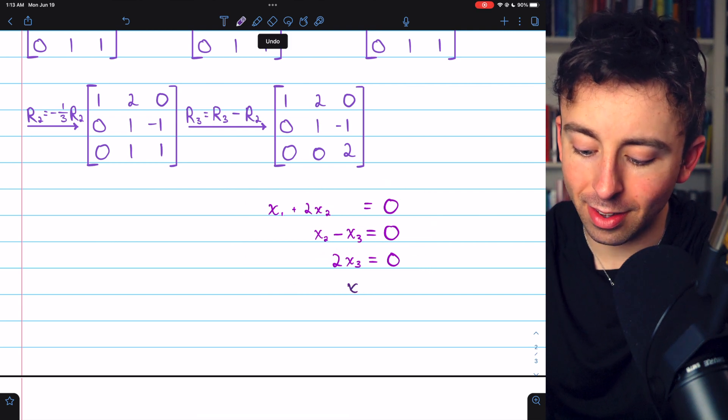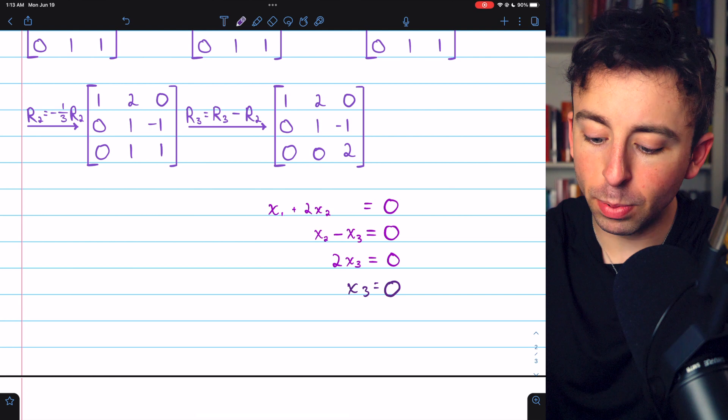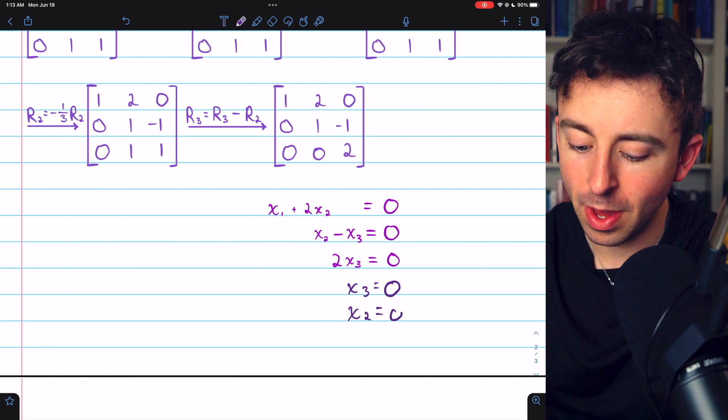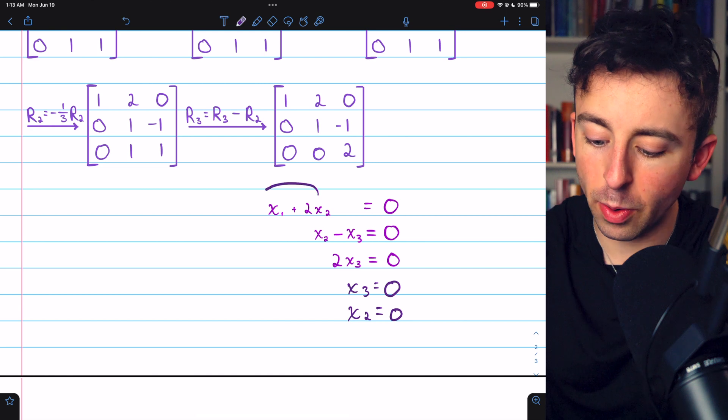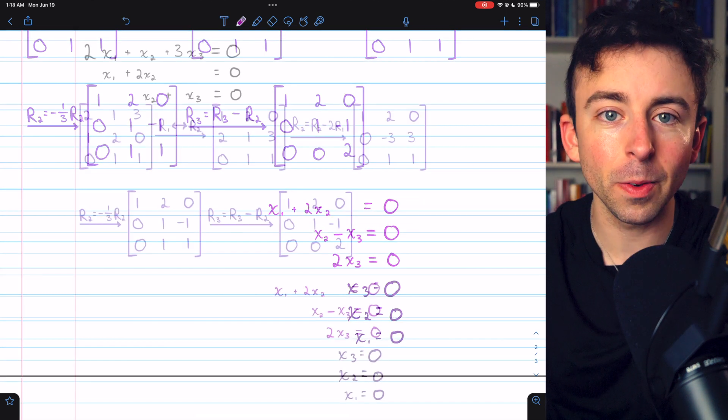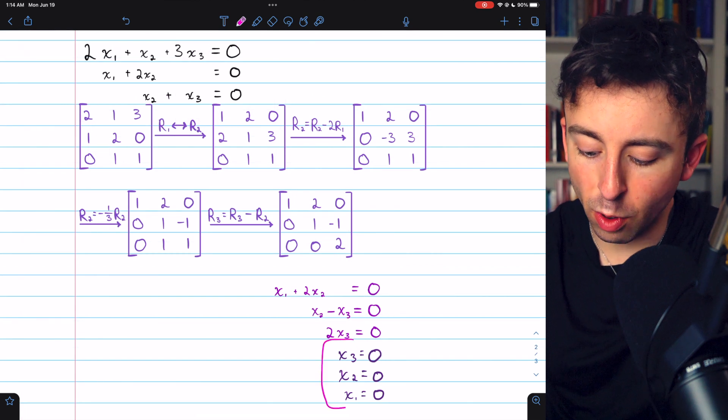2x3 equals 0 means that x3 equals 0. Plugging that into this equation gives x2 equals 0. And then plugging x2 equals 0 into the first equation gives x1 equals 0. So in this case, we only had the trivial solution.